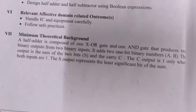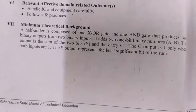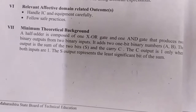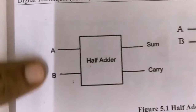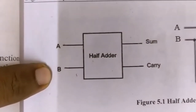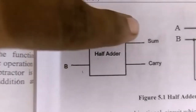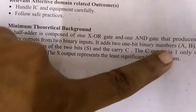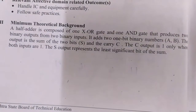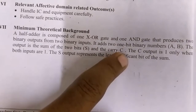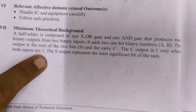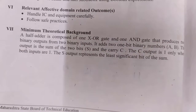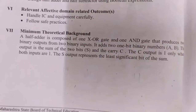Before going into the actual practical, let me explain some theoretical concepts. A half adder is composed of one XOR gate and one AND gate that produces two binary outputs from two binary inputs. The two inputs are named A and B, and the addition of A and B is performed. The result is a Sum and a Carry. It adds two one-bit binary numbers; the output is Sum (S) and Carry (C). The carry output is one only when both inputs are one.